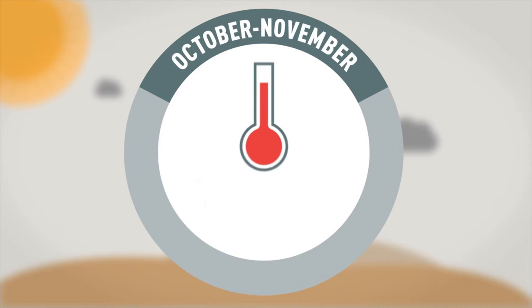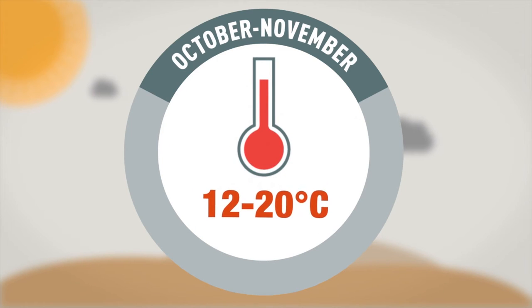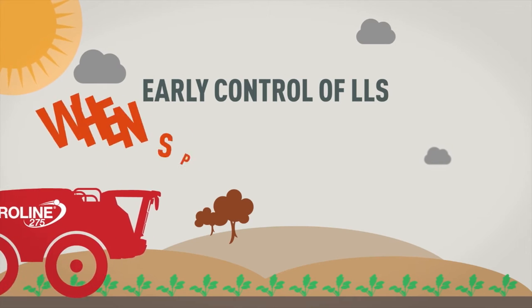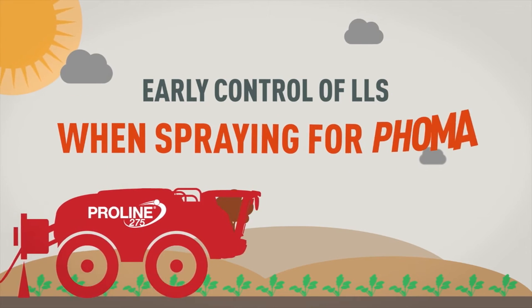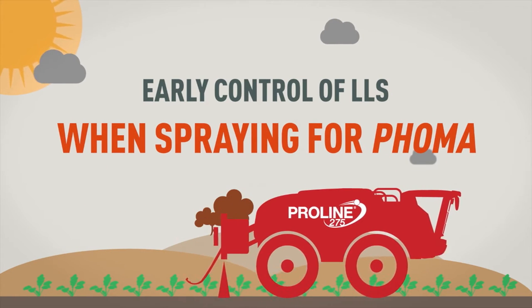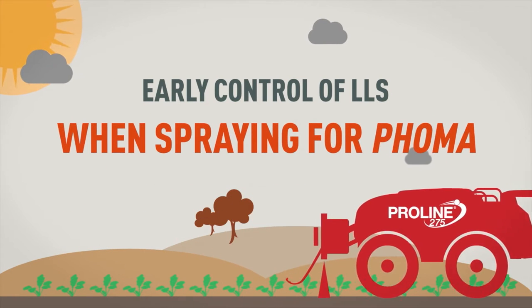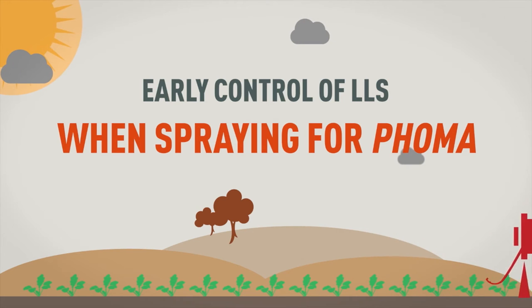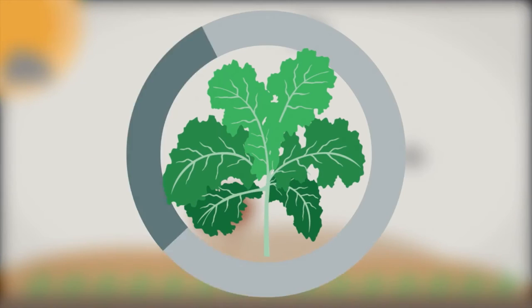Infection of new tissue can occur with as little as 6 hours of wetness at 12 to 20 degrees Celsius. Early control of lightleaf spot can be achieved by using treatments which are effective against the disease, such as proline, when spraying for FOMA.